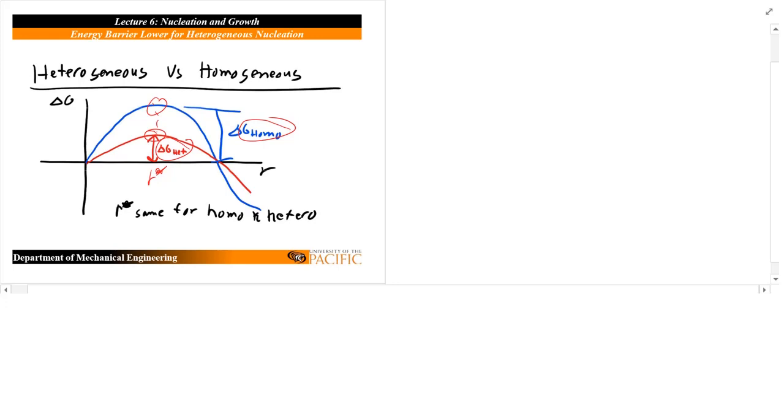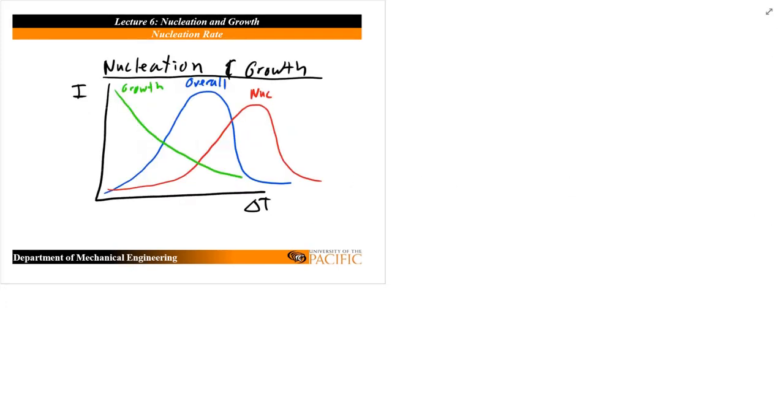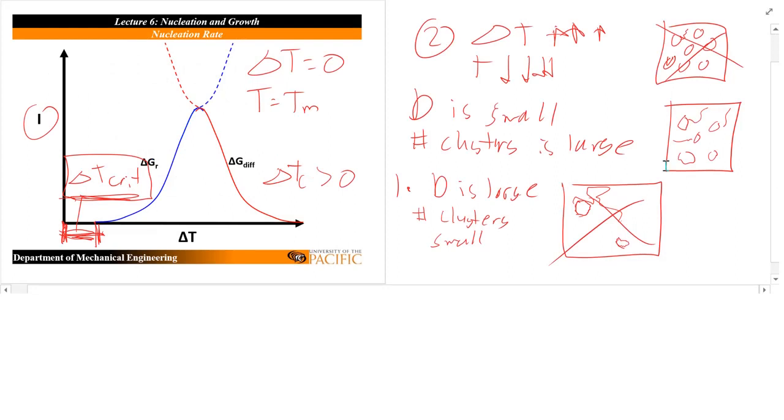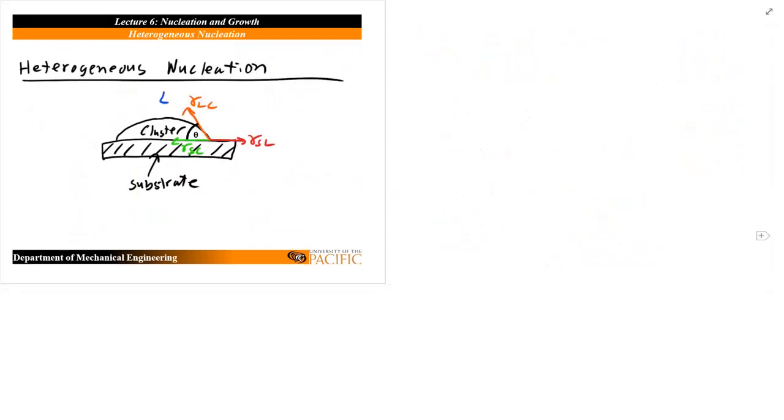Now, you may be asking yourself, we spent a lot of time, we talked about this curve a lot last lecture, you could see some of the notes previously. And I said that this is such an important parameter, this delta T critical, when we can nucleate particles, how that will change as we go from homogeneous to heterogeneous nucleation.